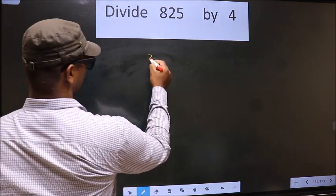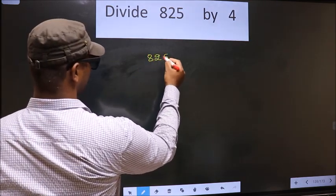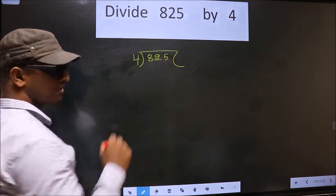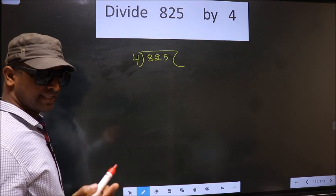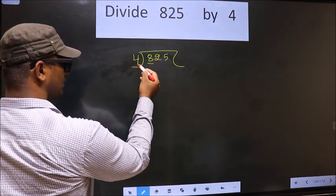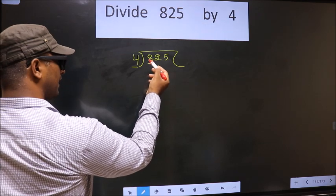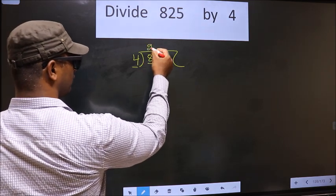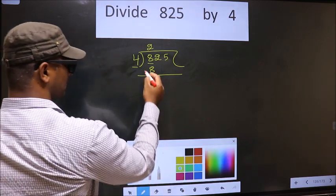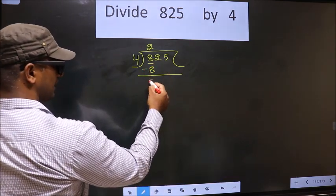That is 8.25, 4 here. Okay. Next. Here we have 8. Here 4. When do we get 8 in 4 table? 4 twos, 8. Now you subtract. 8 minus 8, 0.